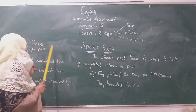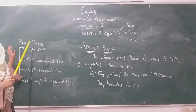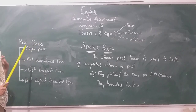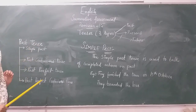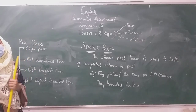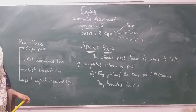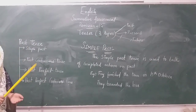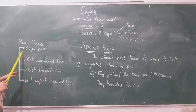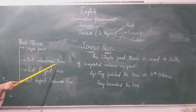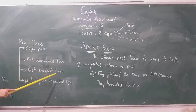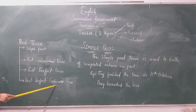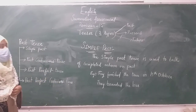Let us study about past tense. Past tense talks about the tense in which you talk about the things that have been already done. Now, past tense types are: simple past tense, past continuous tense, past perfect tense, and past perfect continuous tense.